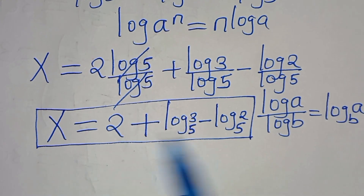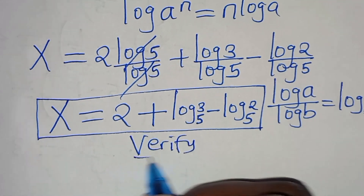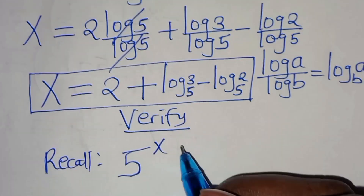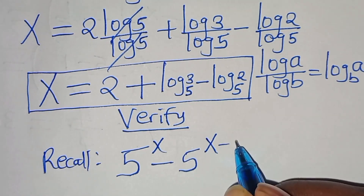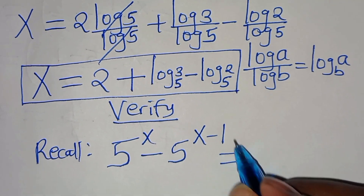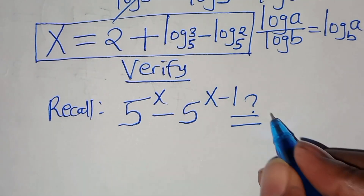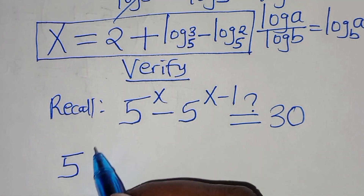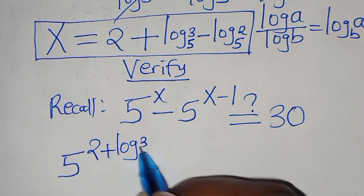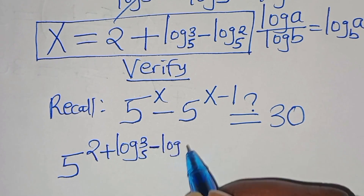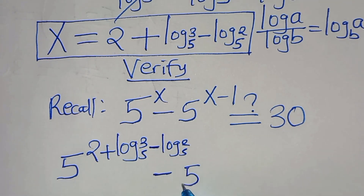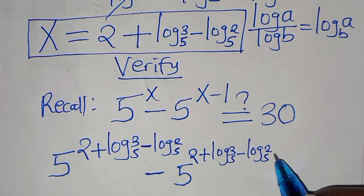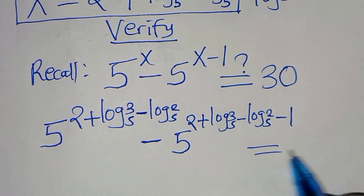The next step is to verify that this value of x satisfies the equation. Recall we had 5^x minus 5^(x-1) equal to 30. Substituting x = 2 + log₅(3) − log₅(2), we get 5^(2 + log₅3 − log₅2) minus 5^(2 + log₅3 − log₅2 − 1), and this should give us 30.